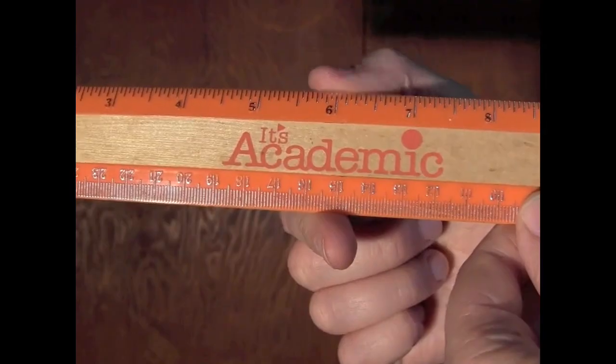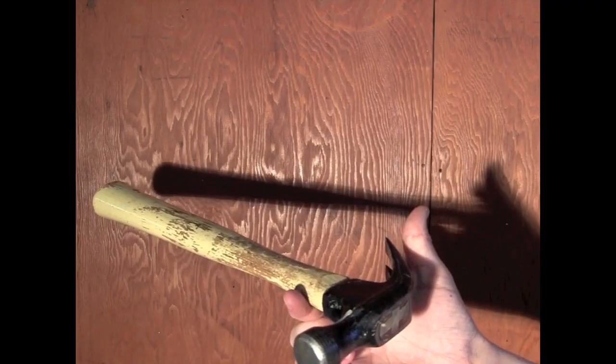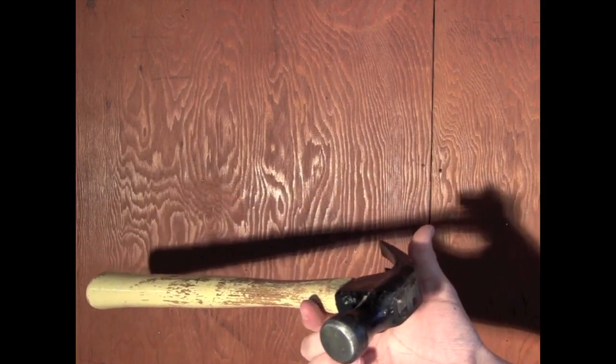Some things balance in the middle, and these things tend to be symmetrical. Other things balance off to one side, always the heavier side.